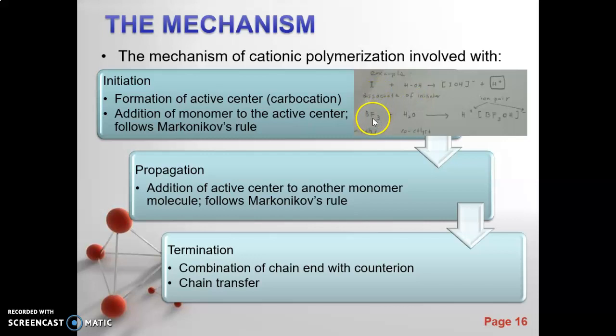BF3 is the initiator, but for Lewis acids it must have a co-catalyst. We choose water as the co-catalyst and it will produce the ion pair, which is positive and negative charge. This is the step of dissociation of the initiator. After dissociation, the ion pair initiator will react with the monomer.